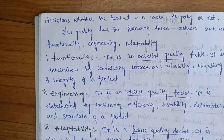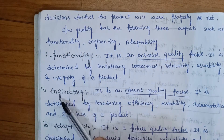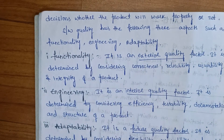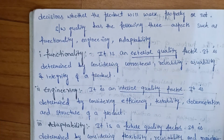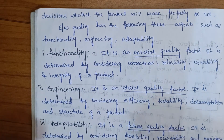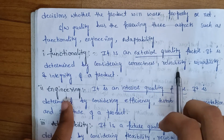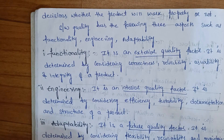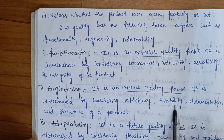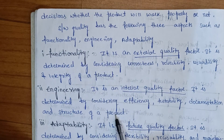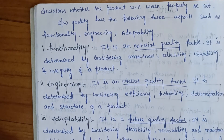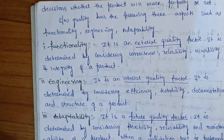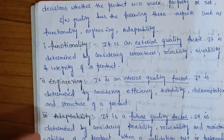Software quality has three aspects. First, functionality — the external quality factor, considering correctness, reliability, usability, and integrity of a product. Second, engineering — the internal quality factor, considering efficiency, testability, documentation, and structure. Third, adaptability — the future quality factor, considering flexibility, reusability, and maintainability of a product.